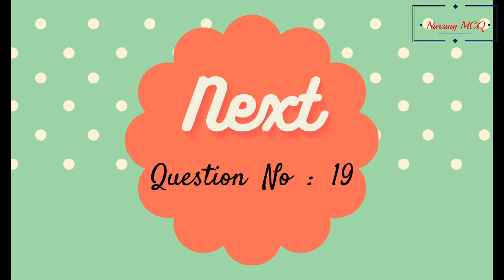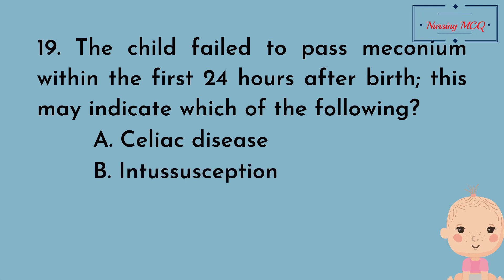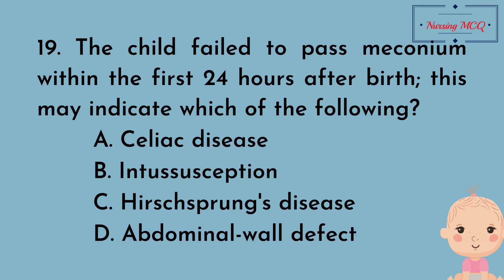Question number 19. A child failed to pass meconium within the first 24 hours after birth. This may indicate which of the following? Option A, celiac disease; Option B, intussusception; Option C, Hirschsprung's disease; Option D, abdominal wall defect. The right answer is Option C: Hirschsprung's disease.